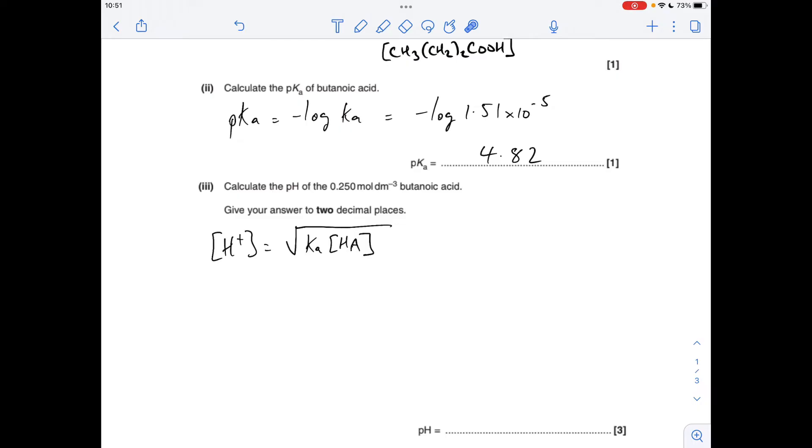So we'll just put the numbers in and give the answer to two decimal places. We'll get an H plus concentration of that. To get the pH, just minus log that number, 2.71 to two decimal places.